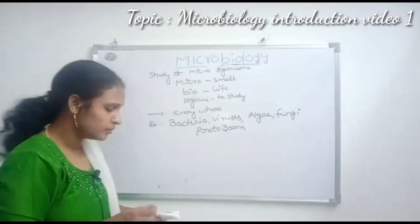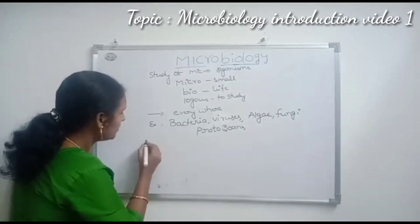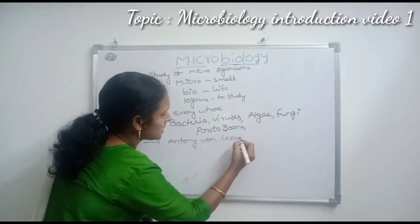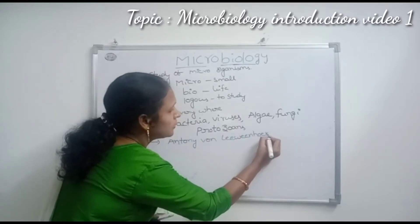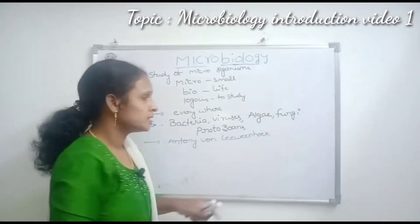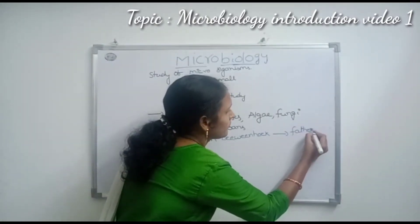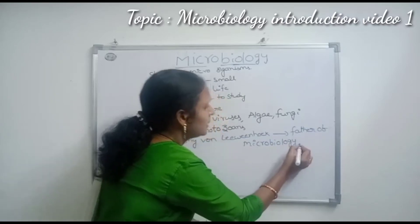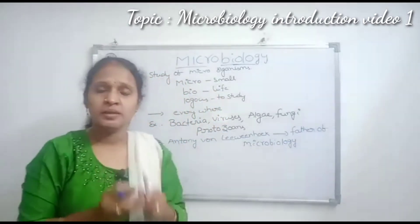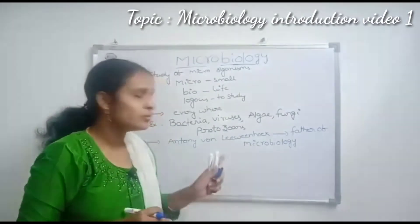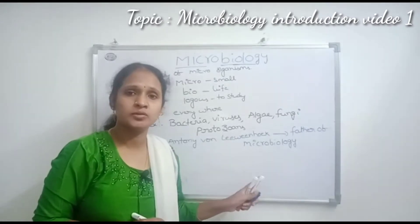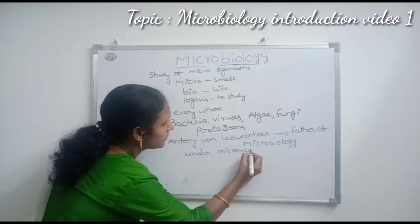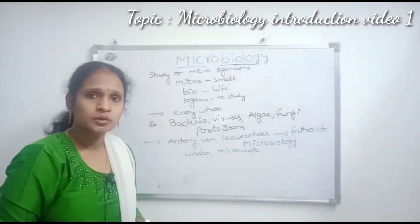The study of microorganisms first began with their discovery by Antony van Leeuwenhoek. He is called the father of microbiology because he first observed microorganisms under the microscope. This was his own self-designed microscope. These microorganisms are not visible to the naked eye and can only be observed under a microscope.